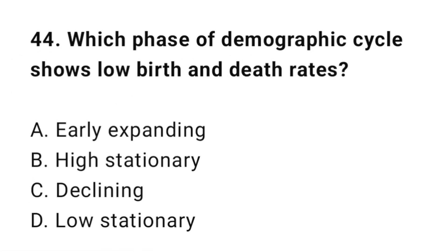Question number forty-four: Which phase of demographic cycle shows low birth and death rates? The correct option is D: Low stationary.